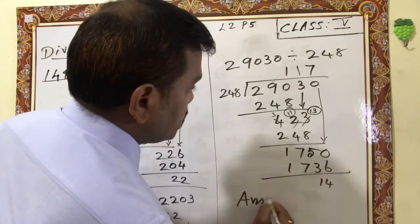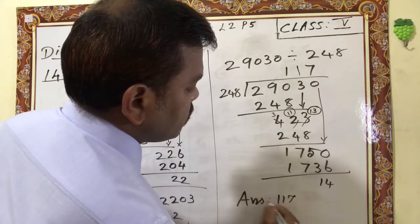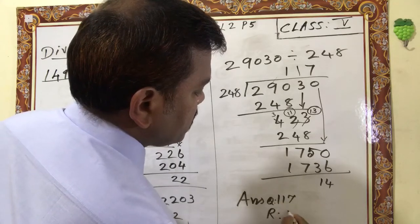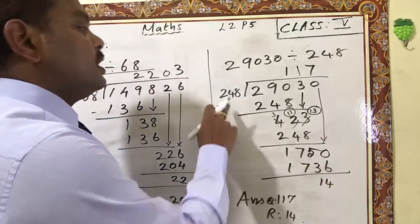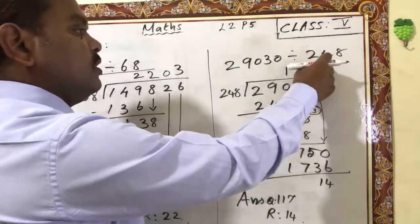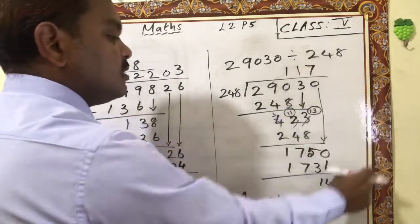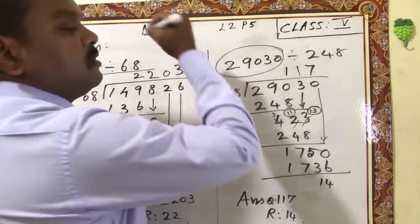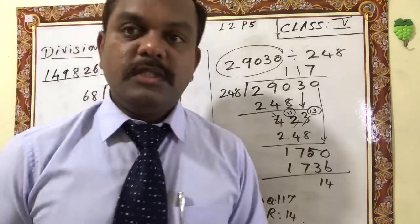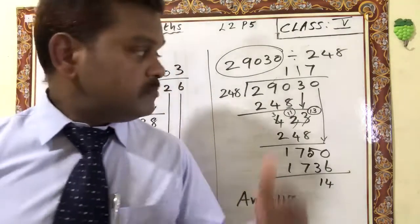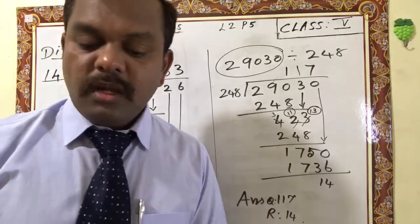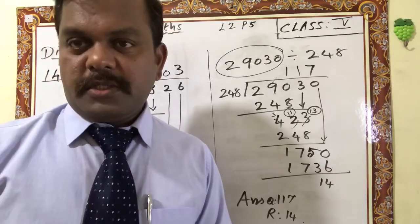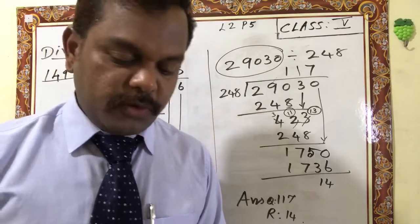So the answer: quotient is 117, remainder is 14. If you multiply 248 × 117 and add 14, you will get the dividend. This is the concept in division. Next, we will learn some story sums — one or two sums I will explain for you.